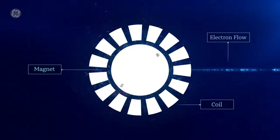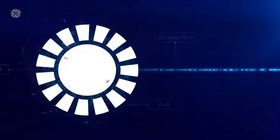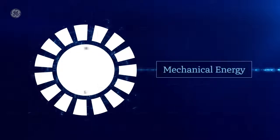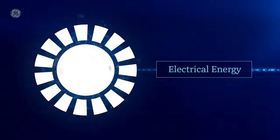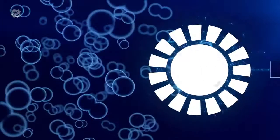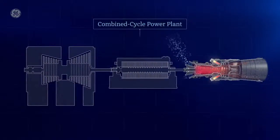The rotating mechanical energy has now been converted into electrical energy, because the movement of electrons through a wire is electricity. In what's called a combined-cycle power plant, the gas turbine can be used in combination with a steam turbine to generate 50% more power.